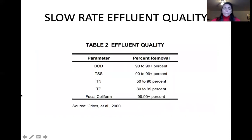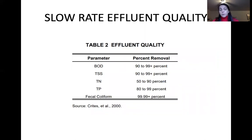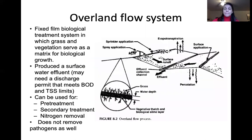The effluent water quality goals for slow rate systems are: 90–100% removal of BOD and total solids, 50–80% removal of total nitrogen, 80–99% removal of total phosphorus, and essentially complete removal of fecal coliforms.